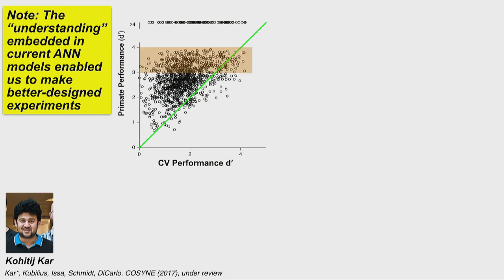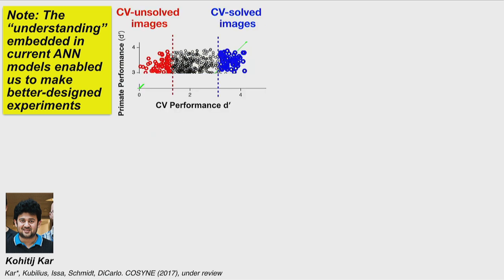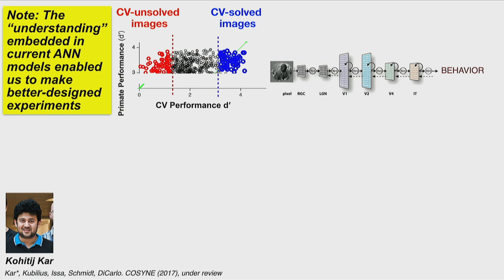Going back to the scatter plot: I'm now isolating the top part — images where primates are very good. All primates and humans find these easy, but there's a nice range of computer vision performance. We can do this at different levels of human performance. Humans and monkeys both find these easy. Some images computer vision also finds easy — those are controls. And here are the special challenge images: computer vision systems are struggling on these, while primate systems deal with them just fine. Those are the two extreme groups: control and challenge.